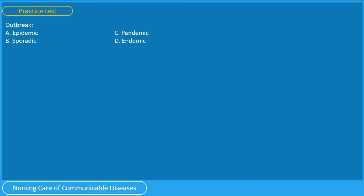At this point, pause this video, gather your thoughts, and when you are ready, let us have a practice test. An outbreak is: A. Epidemic, B. Sporadic, C. Pandemic, D. Endemic. If you answered A. Epidemic, you are correct.